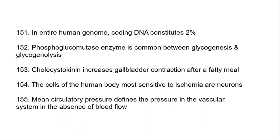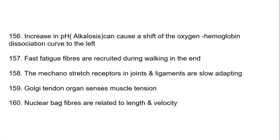Phosphoglucomutase enzyme is common between glycogenesis and glycogenolysis. Cholecystokinin increases gallbladder contraction after a fatty meal. The cells of the human body most sensitive to ischemia are neurons. Mean circulatory pressure defines the pressure in the vascular system in the absence of blood flow.